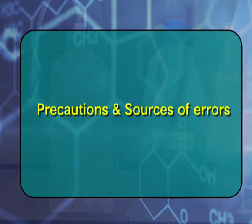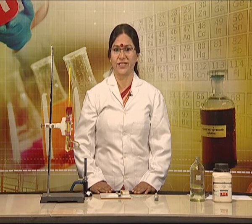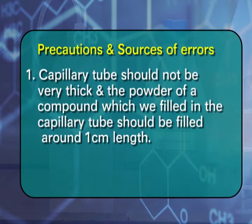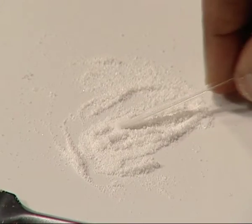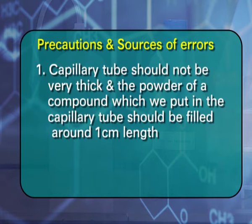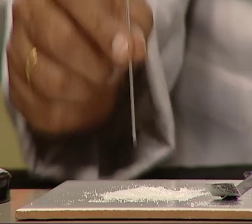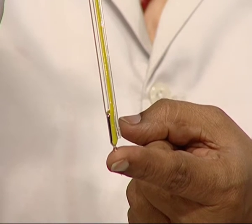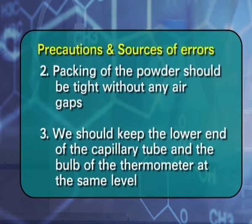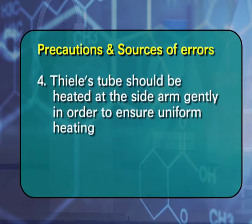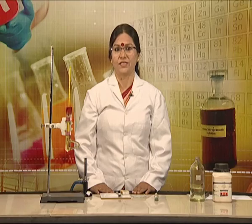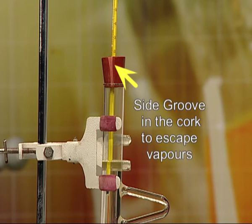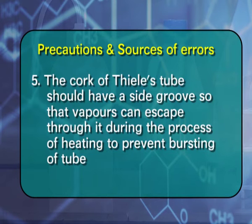Some precautions and sources of error to keep in mind: the capillary tube should not be very thick, and the powder filled in the capillary tube should be about 1 cm in length. Packing of the powder should be tight without any air gaps. The lower end of the capillary tube and the bulb of the thermometer should be at the same level. The bend of Thiel's tube should be heated gently for uniform heating. The cork should have a side groove so vapors can escape to prevent bursting. Safety gloves should be used as heating is involved.